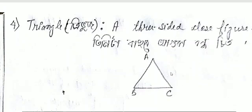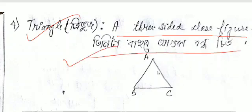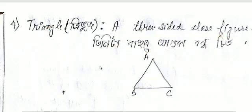The next shape is a triangle. The triangle is a three-sided closed figure. We will discuss more about the quadrilateral part in the next video.